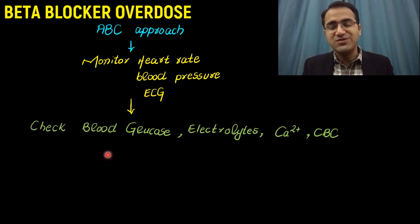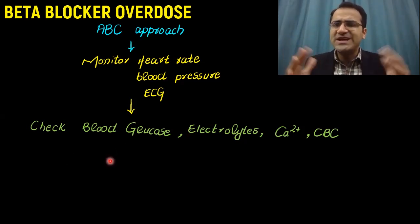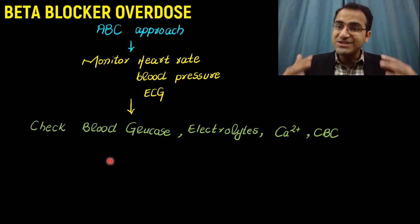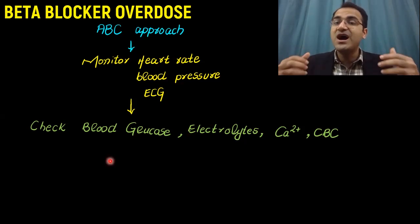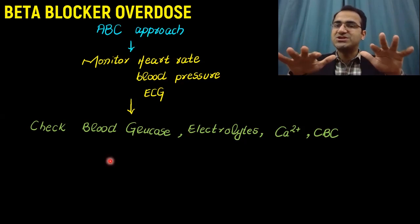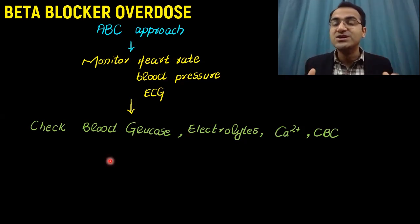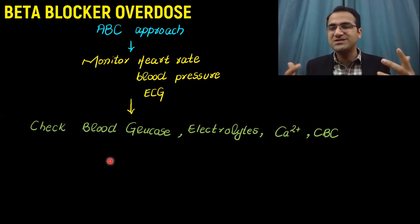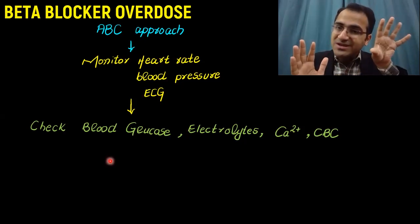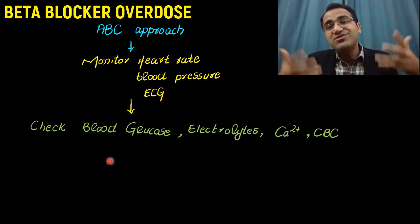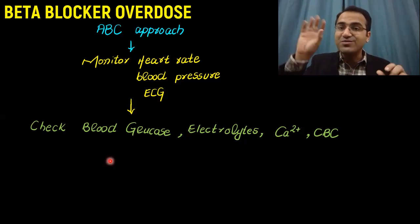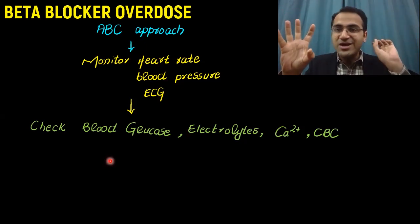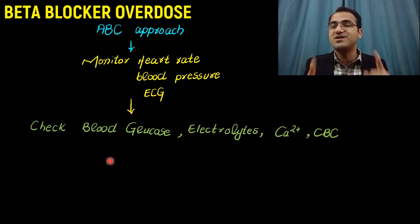Then you check the blood glucose levels. Beta blockers can cause hypoglycemia, so you must check blood glucose levels. These patients will not be showing any symptoms of hypoglycemia because symptoms of hypoglycemia are induced by the sympathetic nervous system - the tremors, the sweating, the anxiety. But these beta blockers have blocked the sympathetic nervous system. Therefore, the symptoms of hypoglycemia are not evident. You must check blood glucose, and if they are in hypoglycemia, give them dextrose.